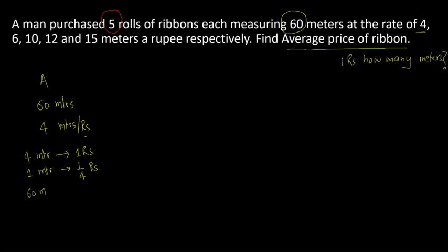I have a total length of 60 meters, so this roll would cost the per-meter cost price multiplied by the total length, which is 60 meters, and that is going to give me 15 rupees. So roll A is going to cost me 15 rupees.